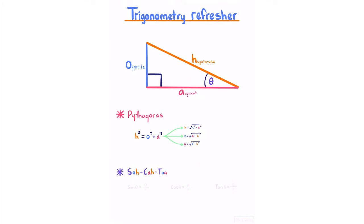SOH-CAH-TOA is a way of remembering the three trigonometric ratios: sine of the angle equals opposite over hypotenuse; cosine of the angle equals adjacent over hypotenuse; and tan of the angle equals opposite over adjacent.